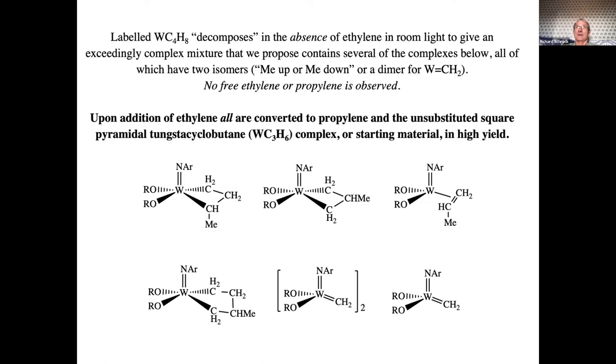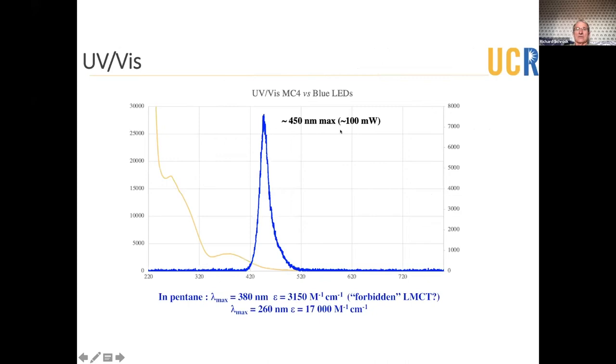And then there are some methylene complexes, either a monomer or a dimer. But if you add ethylene to this complicated mixture formed by photolysis in the absence of ethylene, which you would normally throw away because it's so complex and obviously a decomposition. Well, all of these compounds are converted to the unsubstituted metallicyclobutane or starting material, metallicyclopentane and propylene.